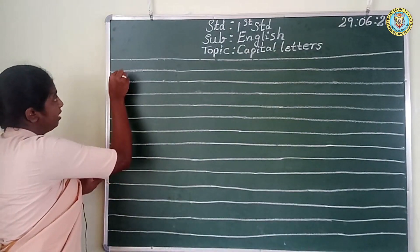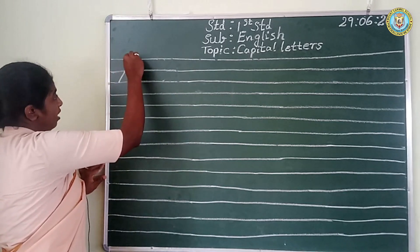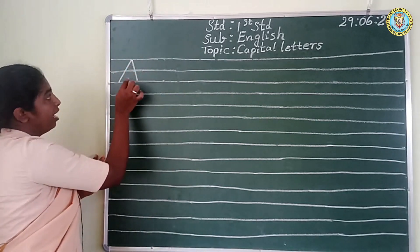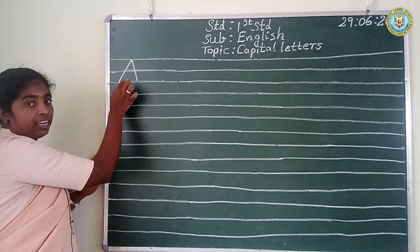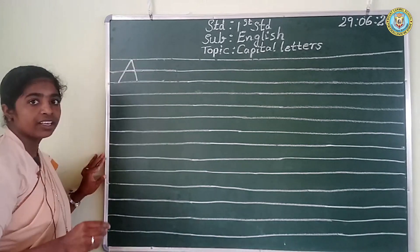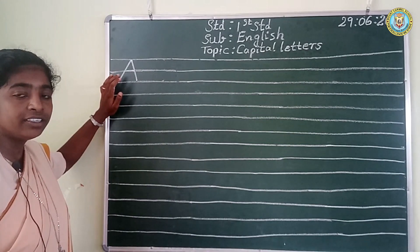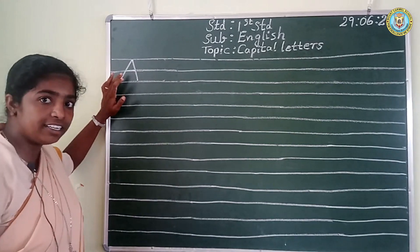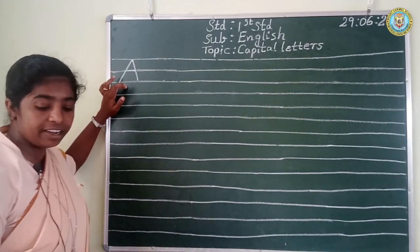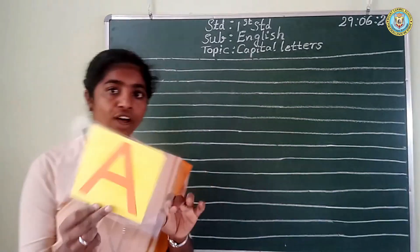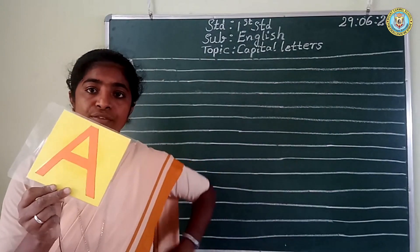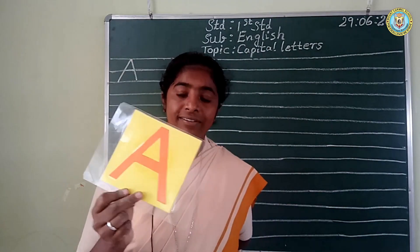The slant line and the sitting line and the middle line, the sleeping line. Look at the board children. Which letter is this? A. A for apple.